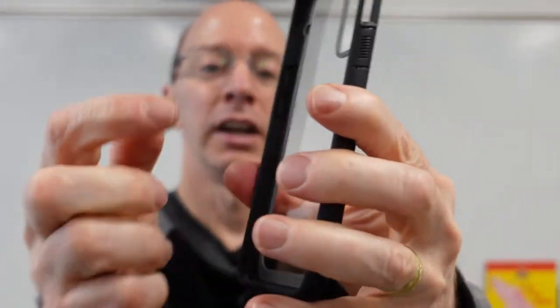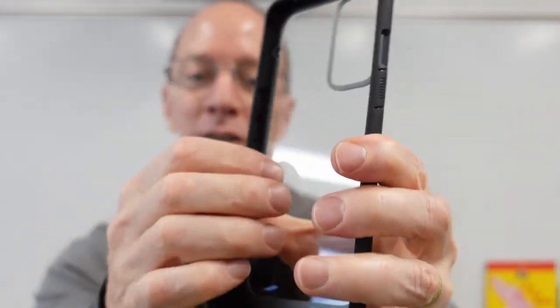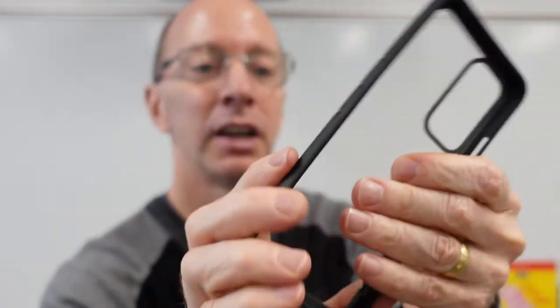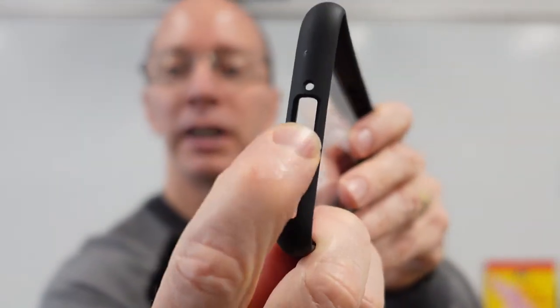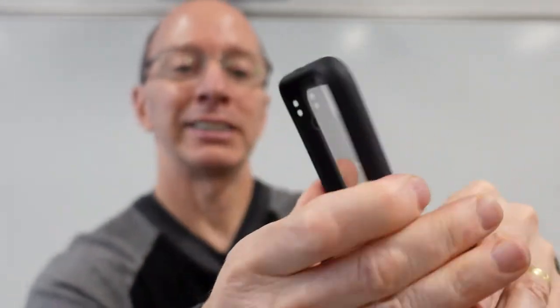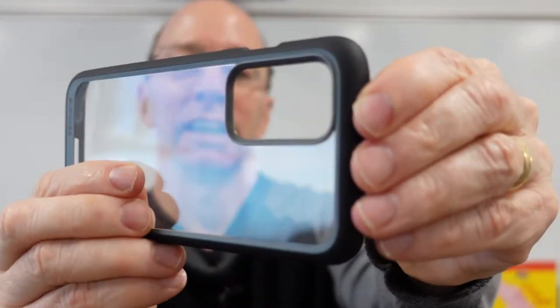So when you put your phone in here, this part right here, the back of it, you'll be able to see. Nice buttons. You can see on the back right here. You can fully access the port and on the side.